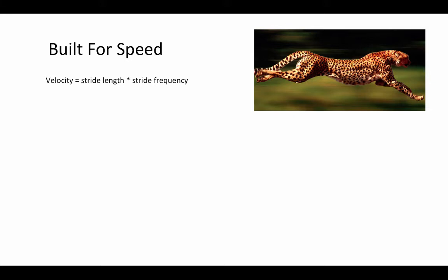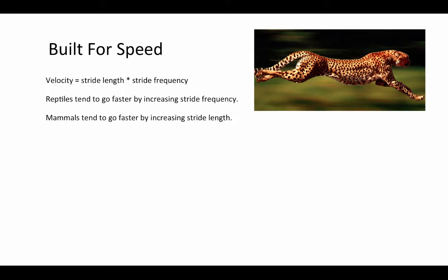There are two factors that can be manipulated when increasing running speed. Reptiles tend to go faster by increasing their stride frequency — they just cycle their limbs at a faster rate. Whereas mammals in general tend to go faster by increasing stride length, and they have many adaptations for increasing that stride length. The first we've already talked about is changing to a gait with an aerial phase, which is going to help to increase the stride length.